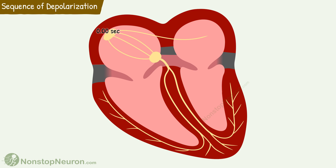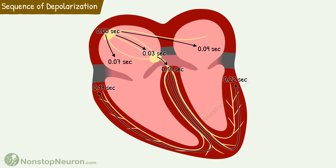If we mark the appearance of impulse at the SA node at 0 seconds, all the atrial muscle cells are stimulated by 0.07 to 0.09 seconds. The impulse reaches the AV node at about 0.03 seconds and emerges at the other end at about 0.16 seconds. Finally, all the ventricular cells are activated by about 0.19 to 0.22 seconds. It is important to understand this course with exact timing to understand the electrocardiogram.